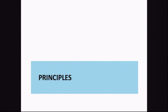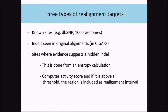The basic principles are to find three types of realignment targets. First, we look at known sites where we've previously found indels. Second, indels found in the alignment of the reads to the reference genome. Third, sites where evidence suggests a hidden indel. These sites can be found using an entropy calculation and an activity score based on things like clusters of mismatches in a particular region.